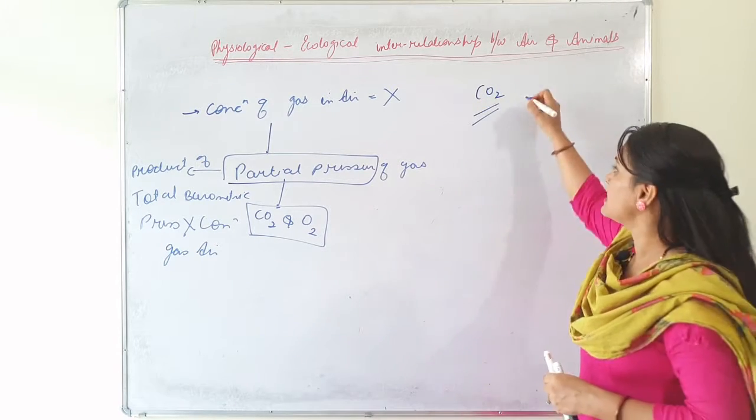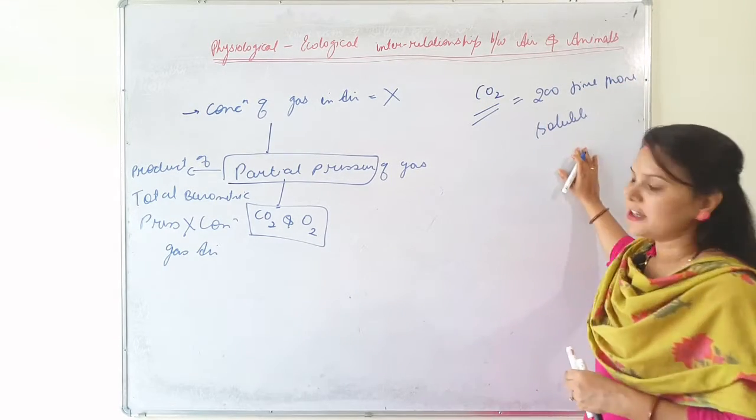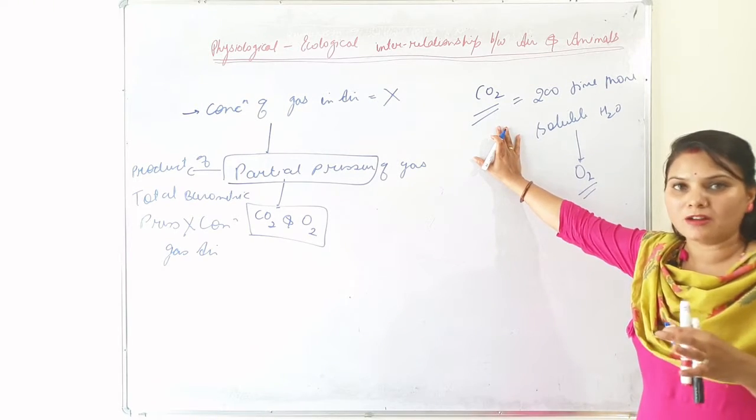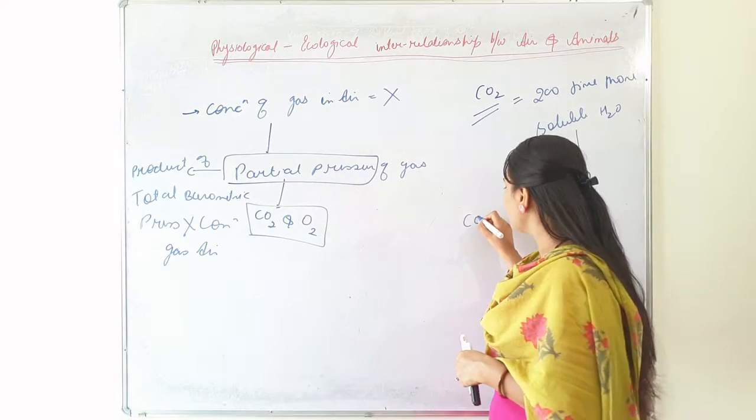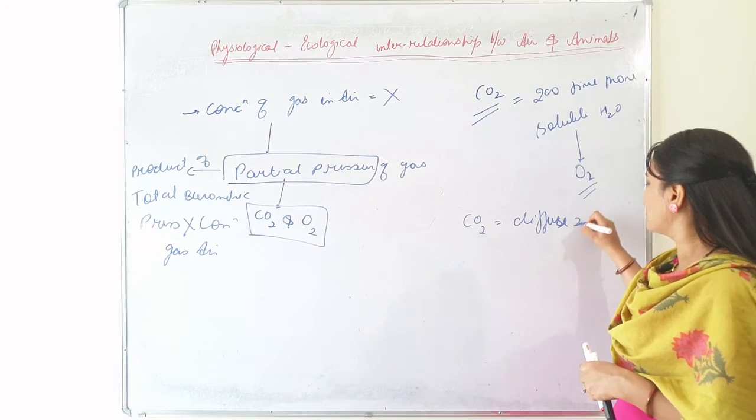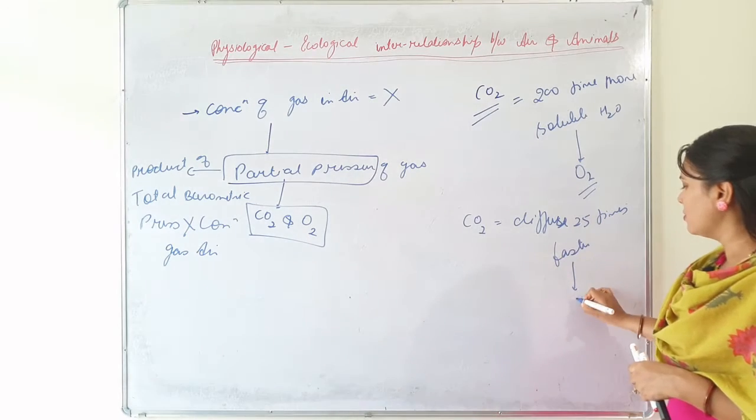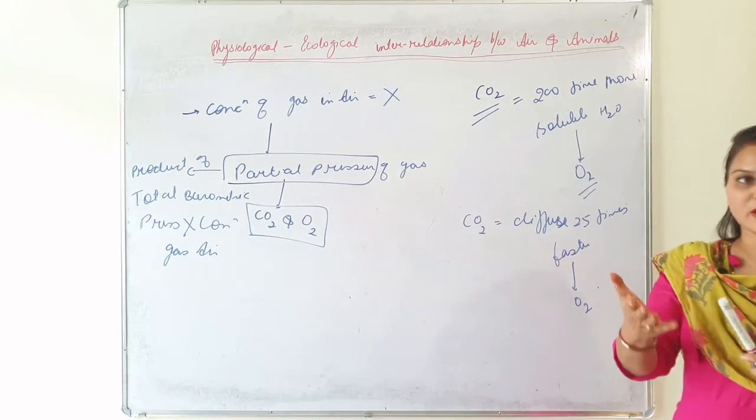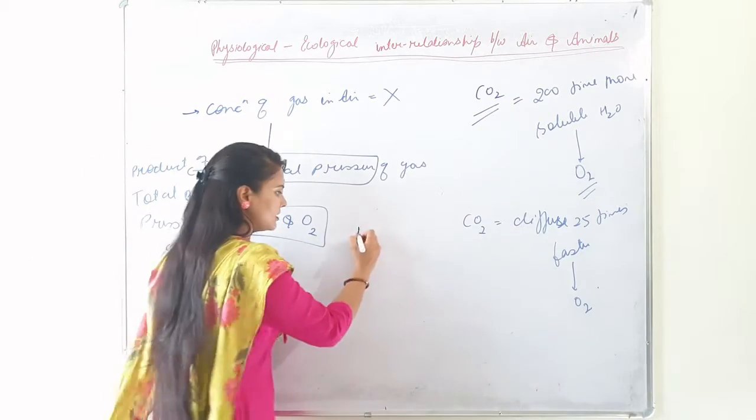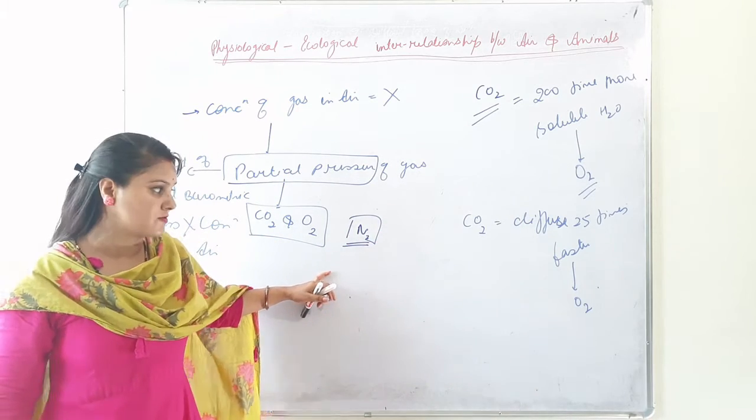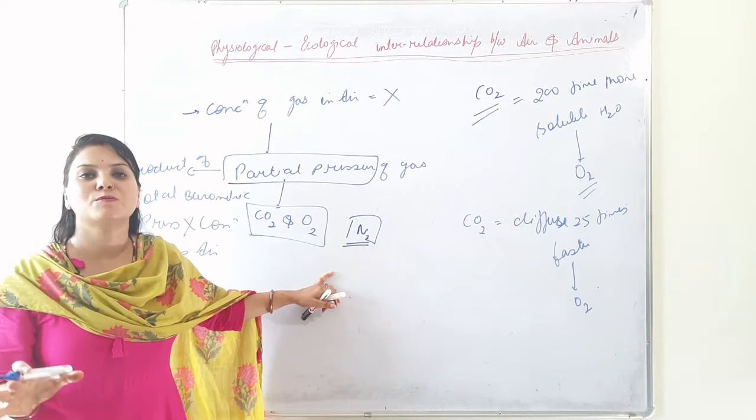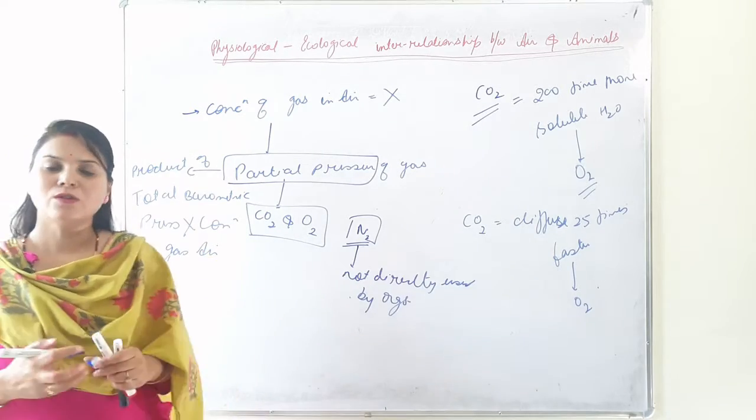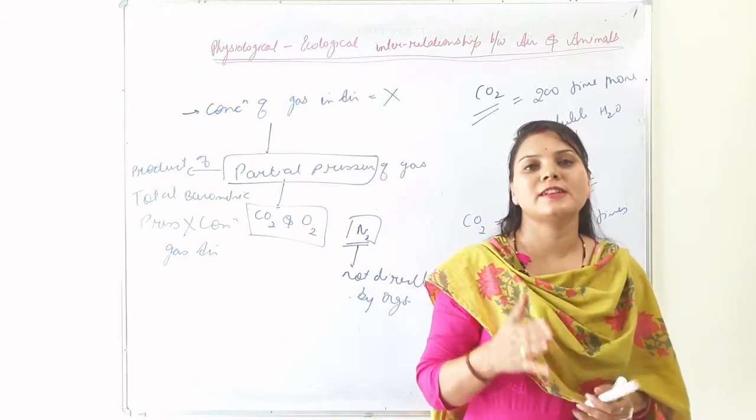Like in the case of CO2, CO2 is 200 times more soluble in water compared to O2. That's why CO2 gets easily dissolved in water bodies. CO2 also diffuses 25 times faster than O2 in water and in human or living tissues. Also, nitrogen which is present in abundance in atmosphere is not directly used by plants or animals except some bacteria and fungi.